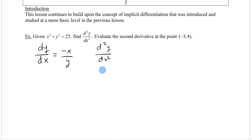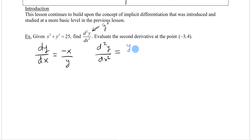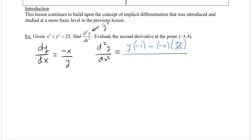You can call it y double prime. Just be careful when combining y primes and y values — students sometimes add them together. To take the derivative of this, we need the quotient rule. The quotient rule: low d high minus high d low, all over the low squared. This gives us our second derivative expression.